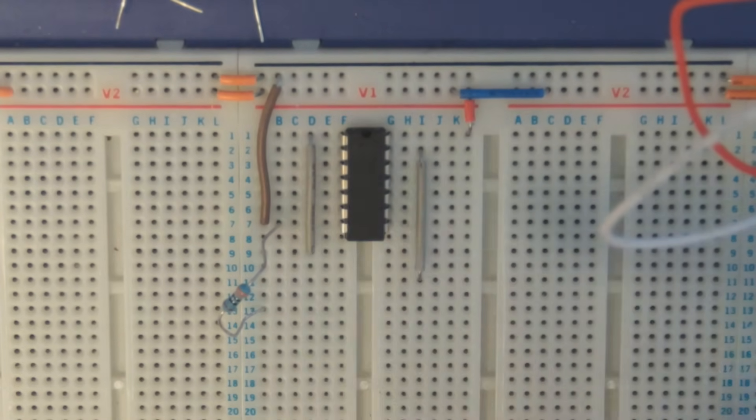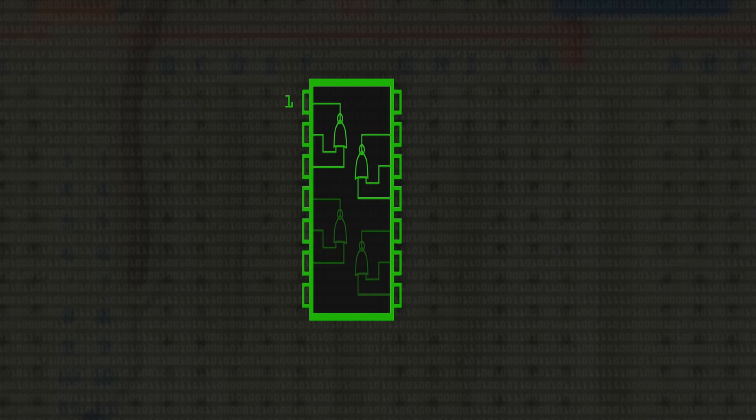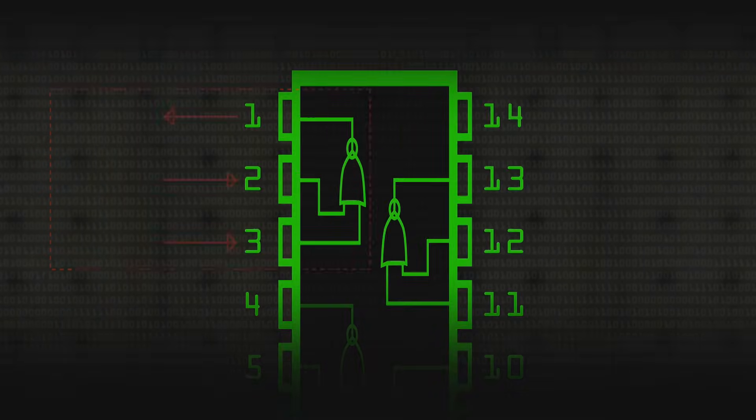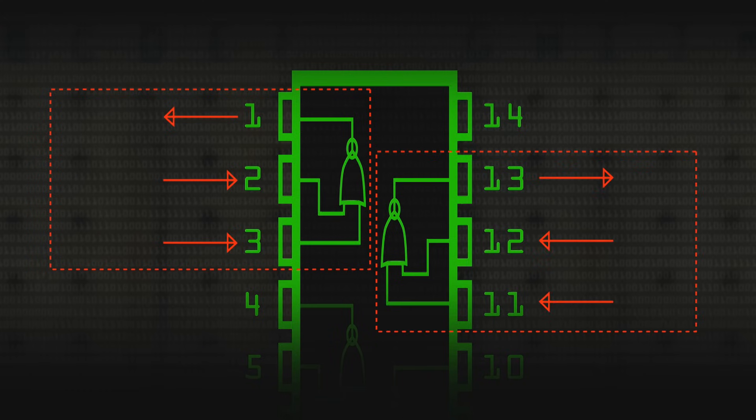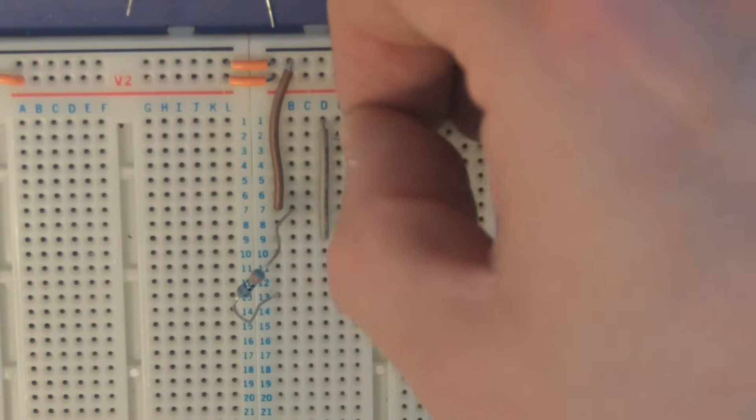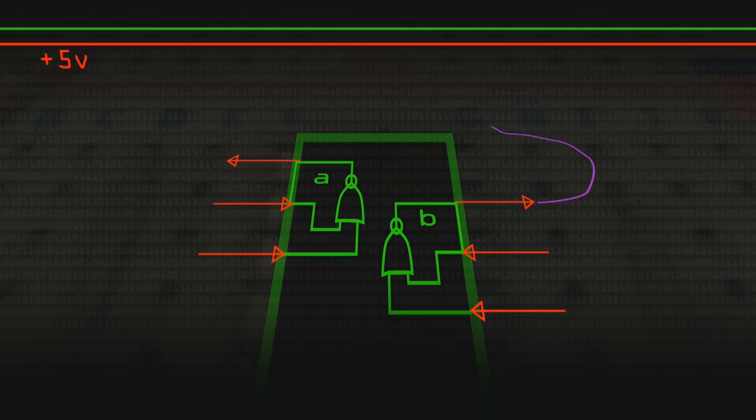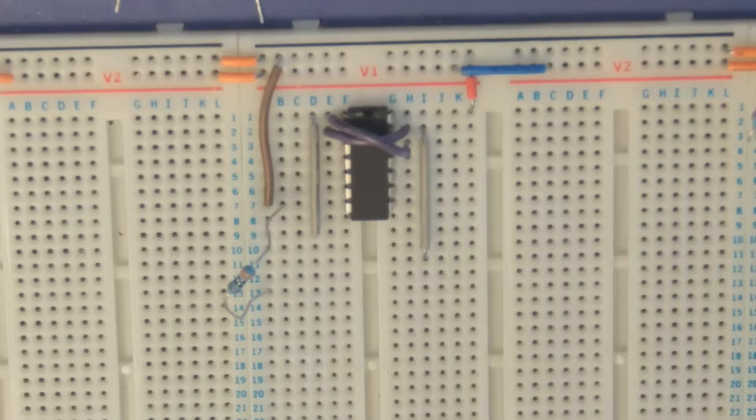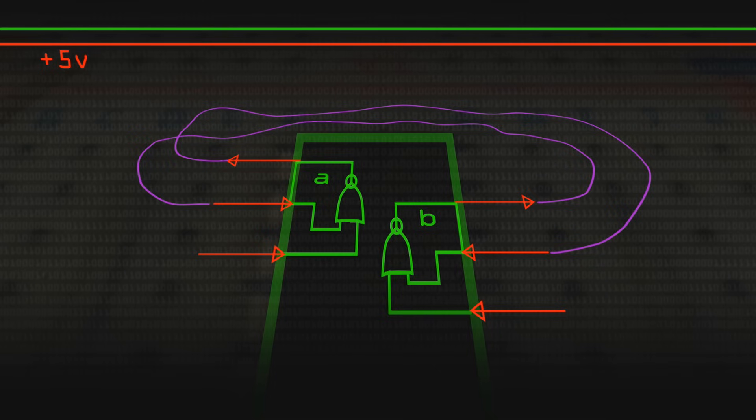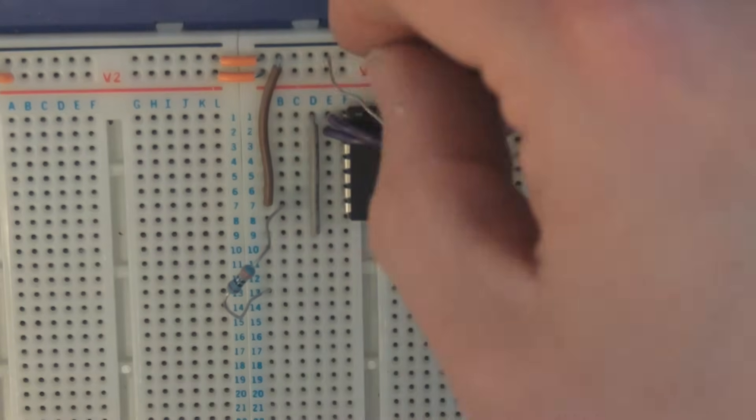I'm going to use this one on the left here, and this one over here. We have pin one is the output of the NOR gate, two and three are the inputs. And on the other side, pin 13 is the output, and pin 11 and 12. So I'm going to connect the output of this NOR gate on the right-hand side to the input of the one on the left-hand side. We've connected the output of NOR gate B to the input of NOR gate A. I'm now going to connect the output of NOR gate A back to the input of NOR gate B. So we've got these two things crossed over, but the output of one is connected to the input of the other.